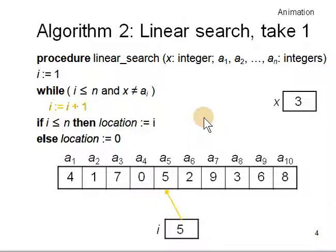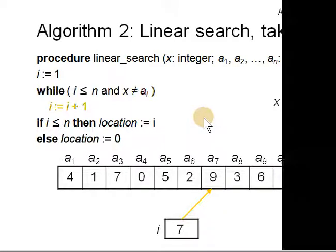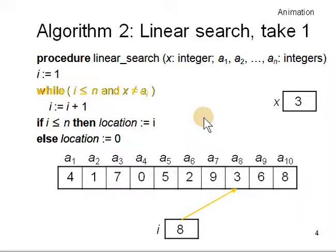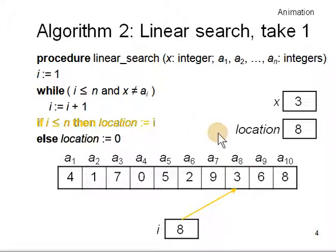Keep going forward. The while loop keeps going. And then eventually you come to 3. You found it. Location is equal to 8. Okay. And you are done.